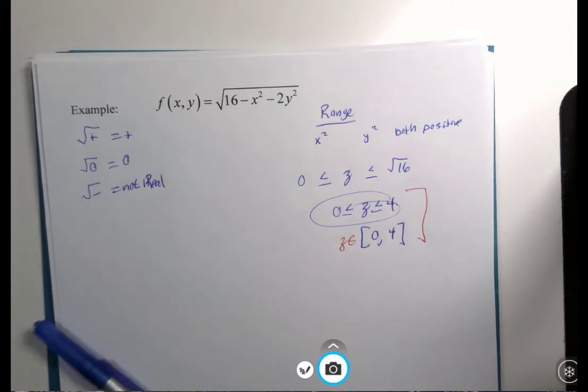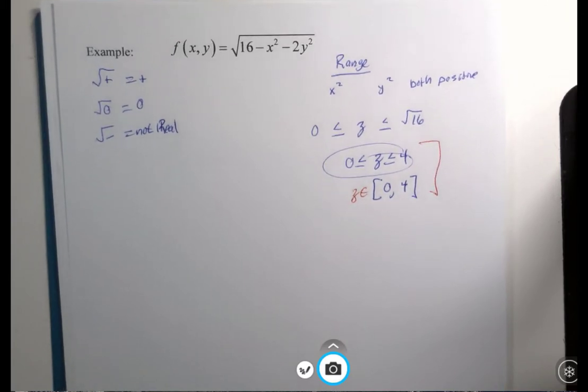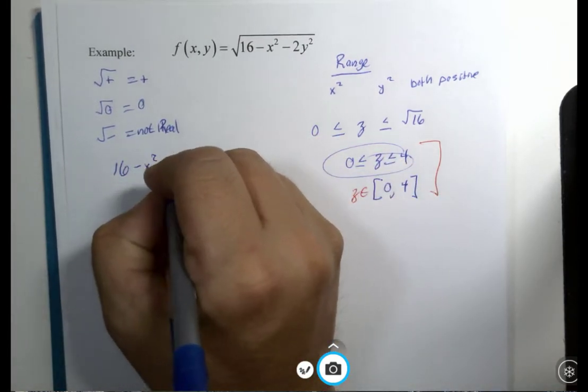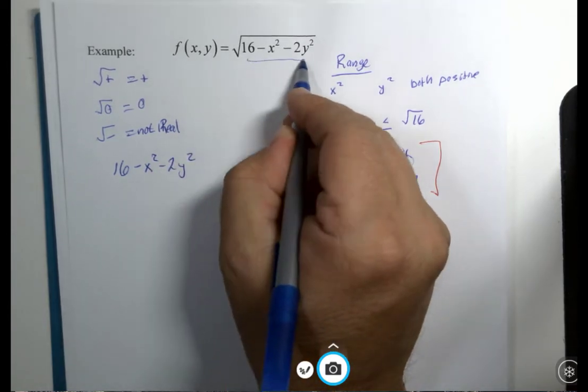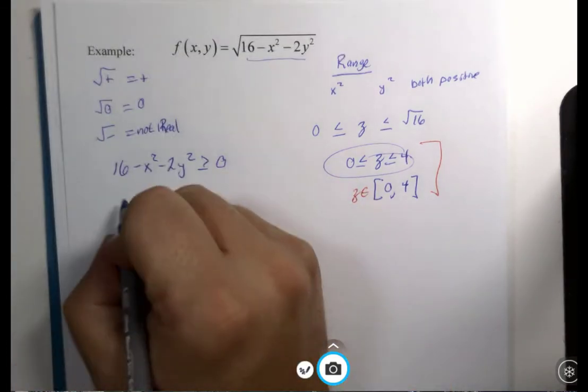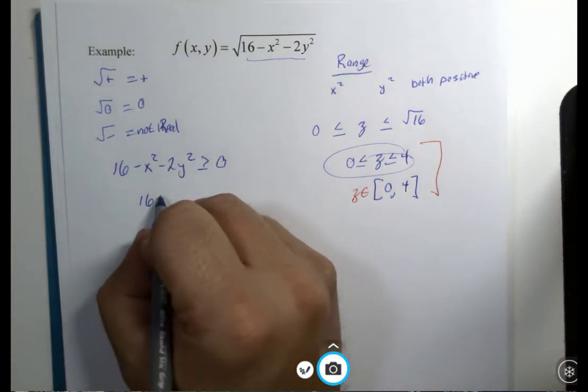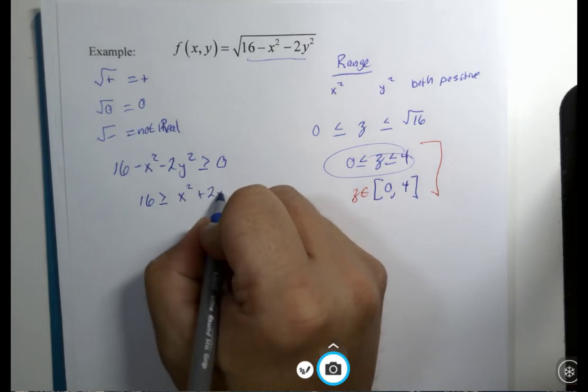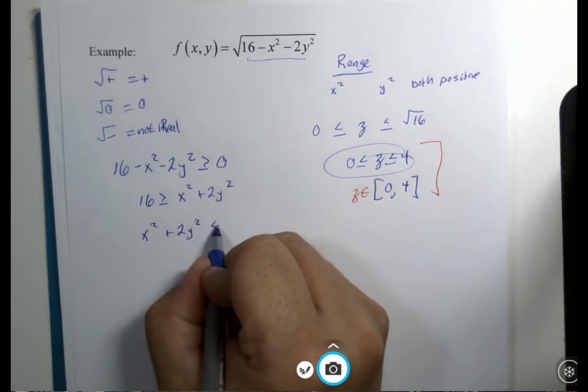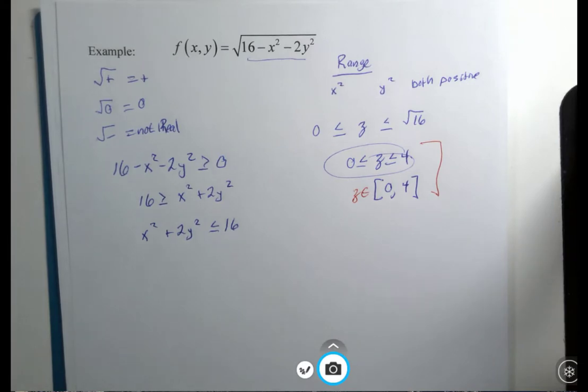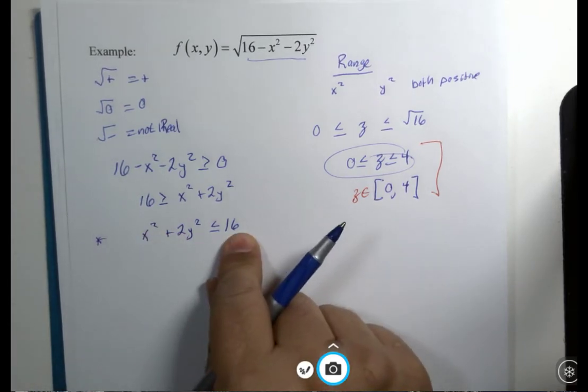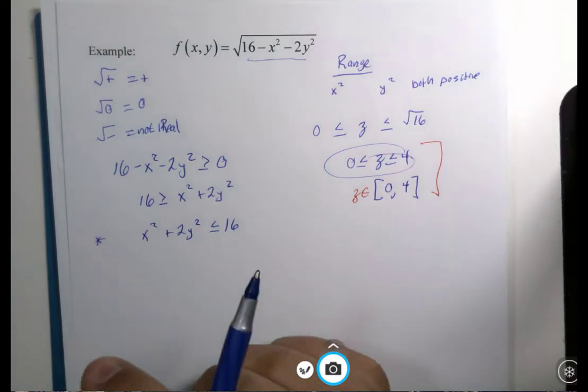Now we can look at the domain. We're going to sketch it again: 16 - x² - 2y² has to be non-negative or greater than or equal to zero. So, a little manipulation here: 16 ≥ x² + 2y². I'm going to do a little reversal: x² + 2y² ≤ 16. You could say that is the domain. You choose x and y values so that this statement is true and you're good. But my directions say sketch it, so what's it look like?